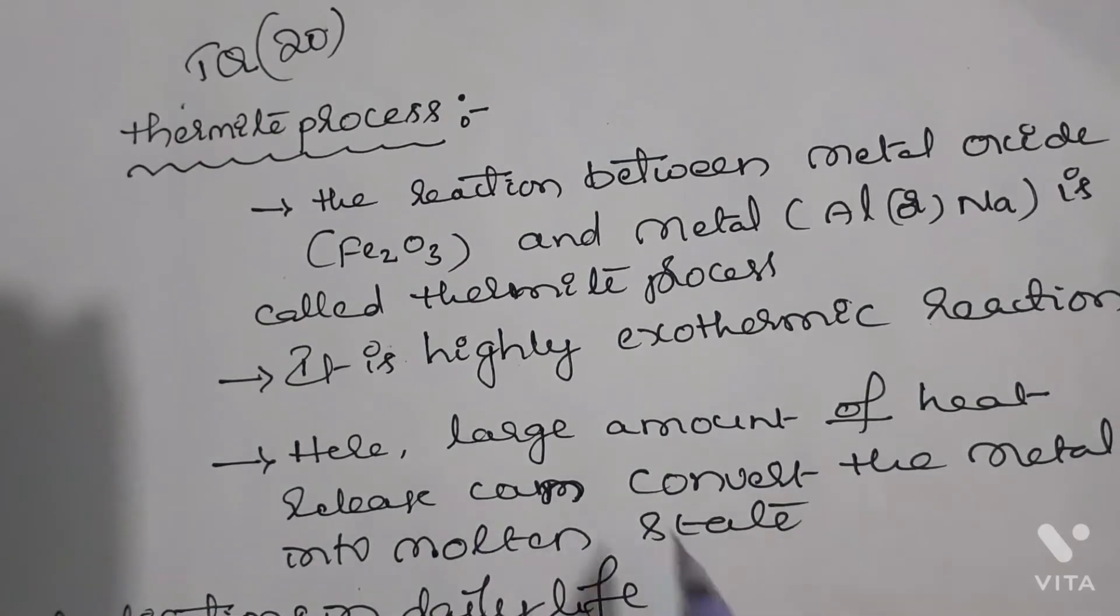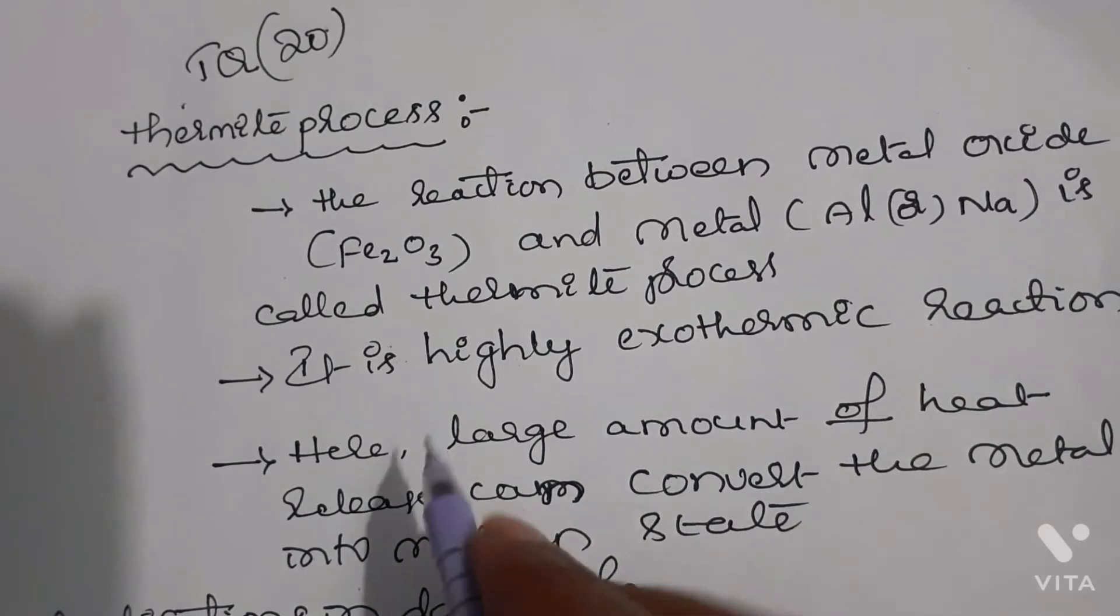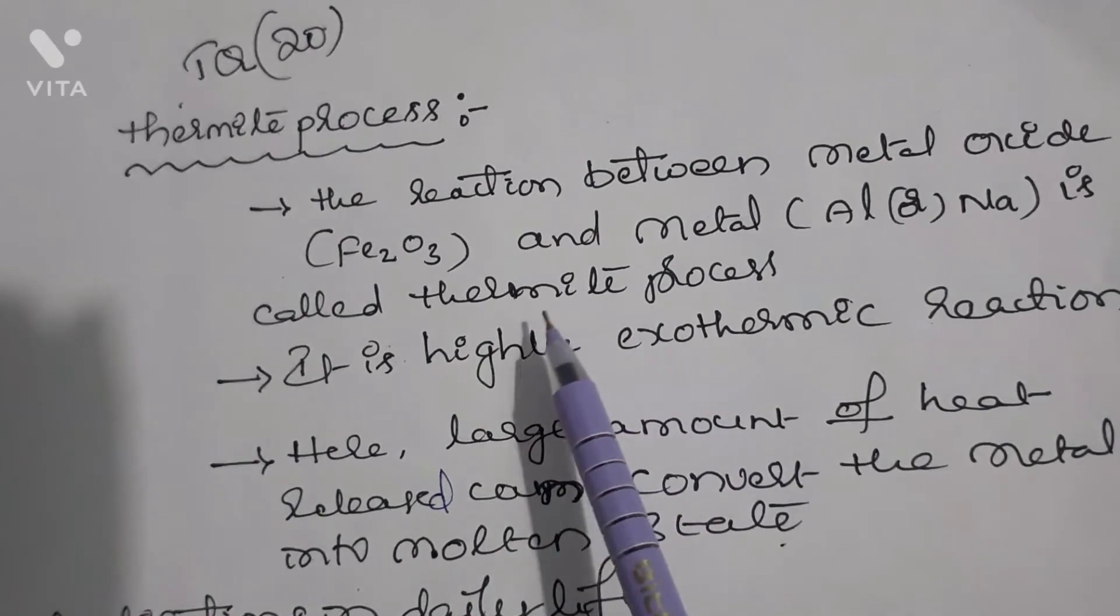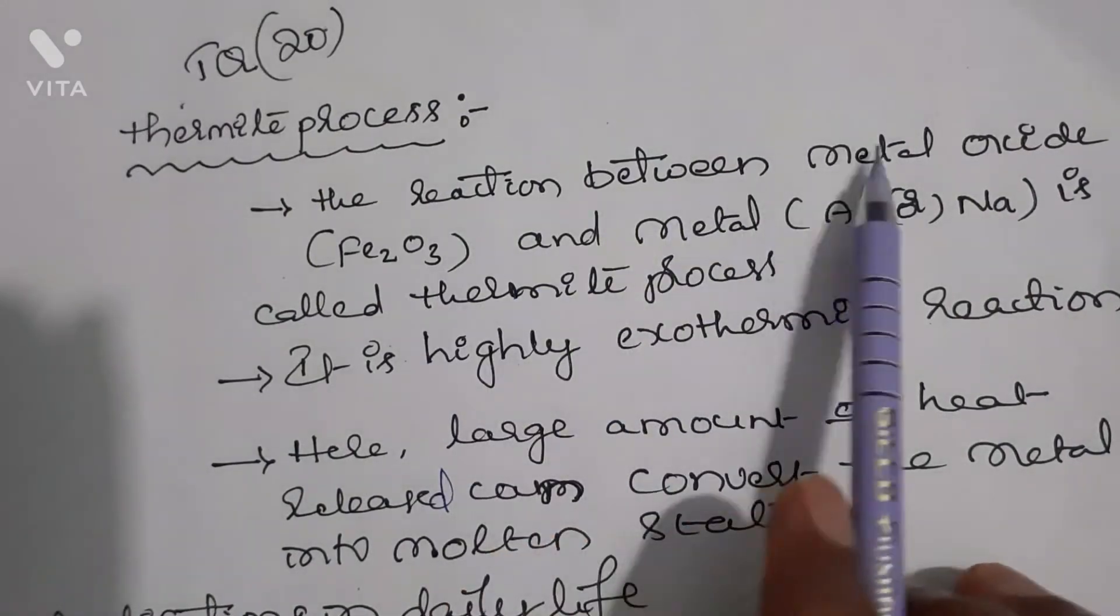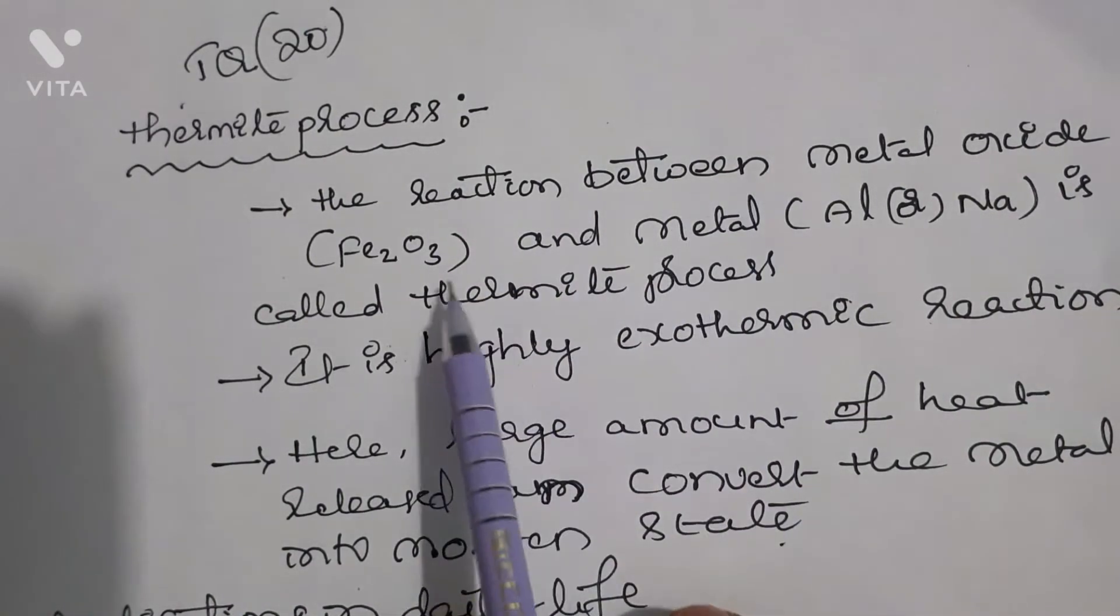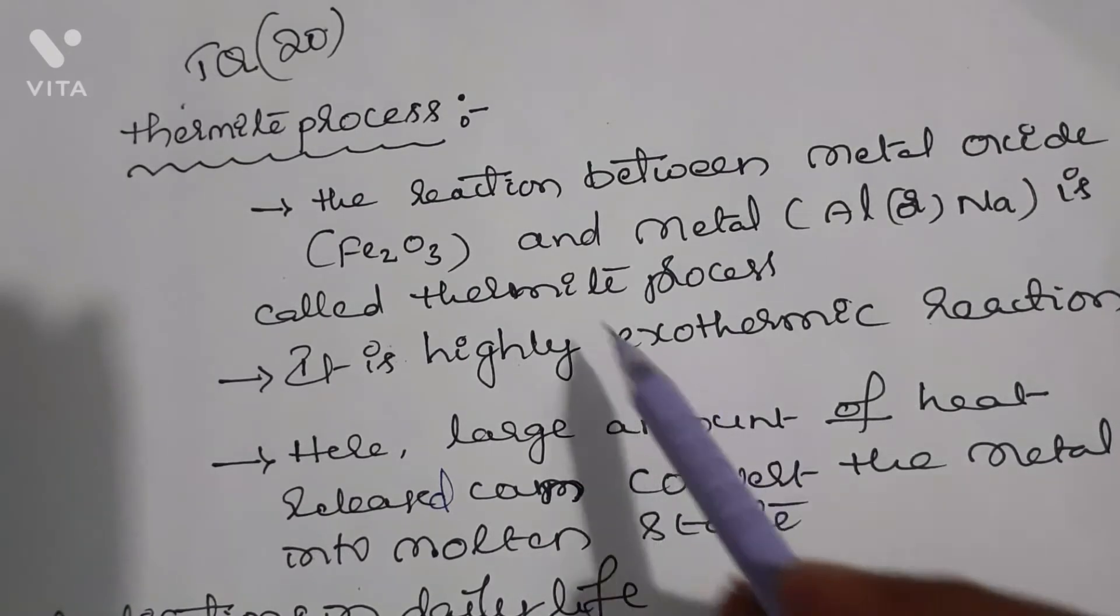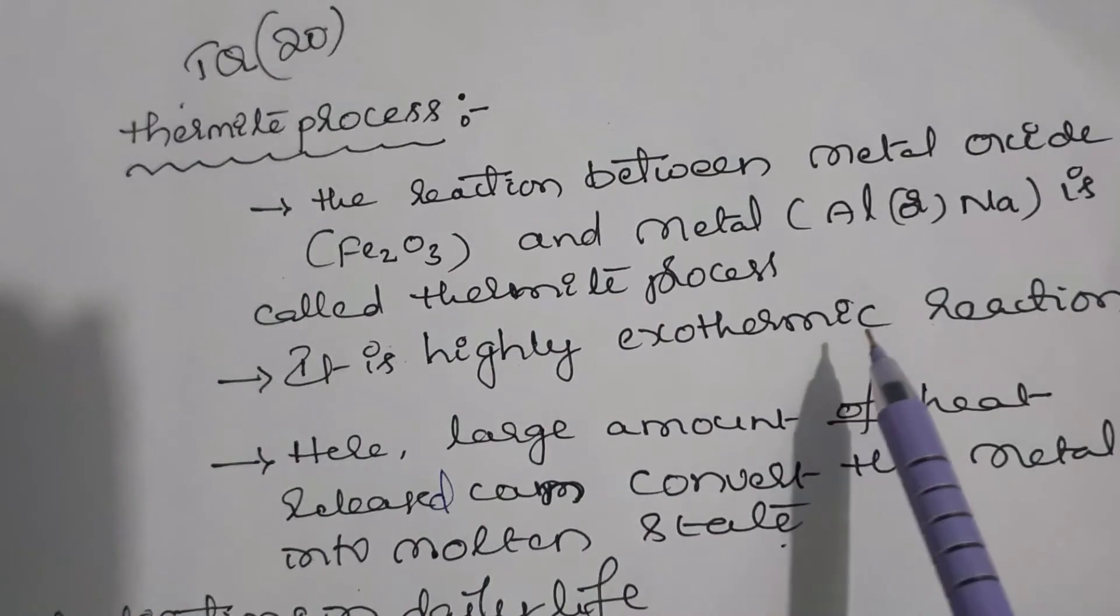The large amount of heat released can convert the metal into molten state. In this reaction, the metal can be separated from the metal oxide and converted into molten state, that is liquid state. These are the three points related to thermite process students.